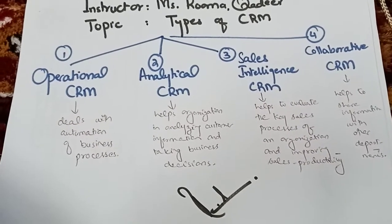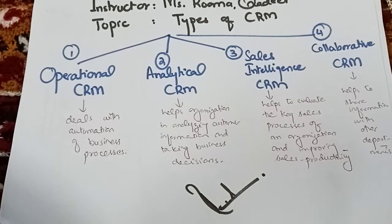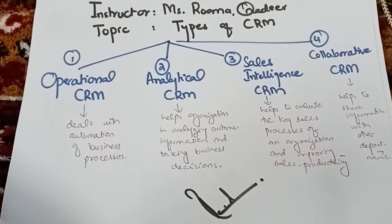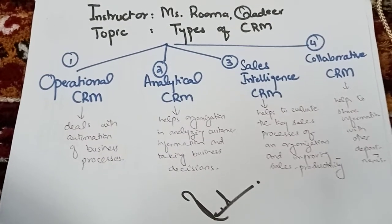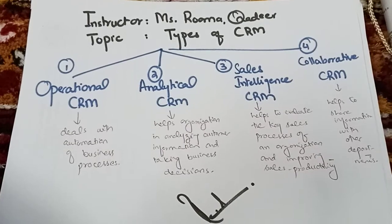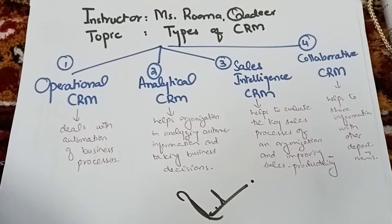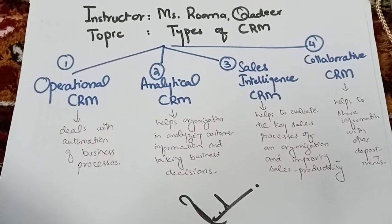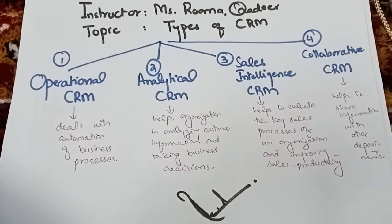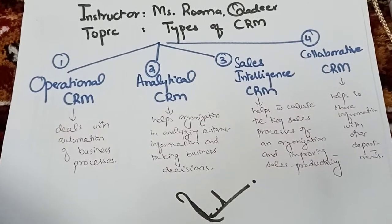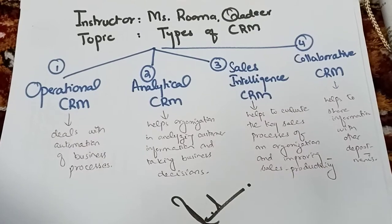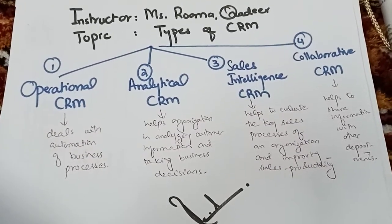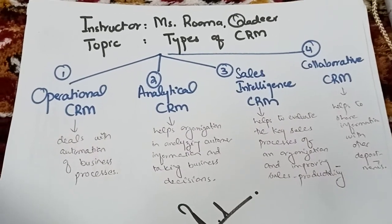Fourth is collaborative CRM. Collaborative CRM plays a very important role — the information we have in CRM about our customers is forwarded to the rest of the departments where it is required. For example, what kind of information HR or finance is looking for — those departments contact collaborative CRM. So collaborative CRM is helpful for sharing customer information with other departments. These are the four types: operational, analytical, sales intelligence, and collaborative CRM. Thank you.